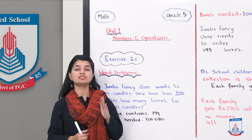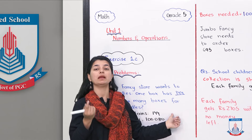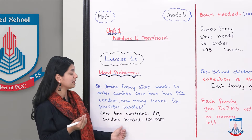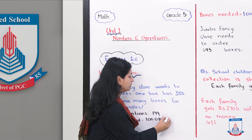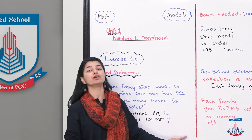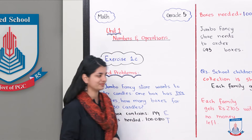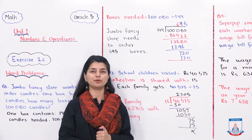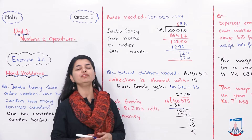First we'll write it in statements. One box contains 144 candles — you'll state how many candles are in one box, then how many candles they need in total, and then why you have the total and you have each. So you'll find out how many boxes are required. Boxes needed would be 100,080 divided by 144. You'll write it in division form with 100,080 as the dividend and 144 as the divisor.